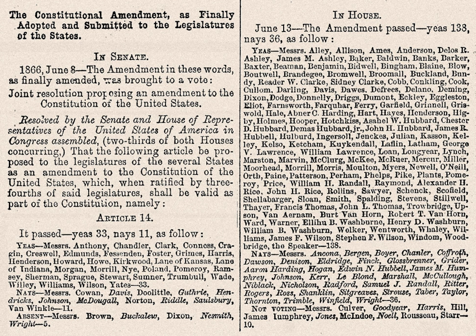Section 2: Representatives shall be apportioned among the several states according to their respective numbers, counting the whole number of persons in each state, excluding Indians not taxed. But when the right to vote at any election for the choice of electors for president and vice-president of the United States, representatives in Congress, the executive and judicial officers of a state, or the members of the legislature thereof, is denied to any of the male inhabitants of such state, being twenty-one years of age and citizens of the United States, or in any way abridged, except for participation in rebellion or other crime, the basis of representation therein shall be reduced in the proportion which the number of such male citizens shall bear to the whole number of male citizens twenty-one years of age in such state.